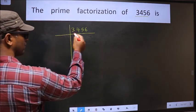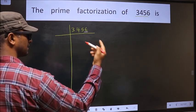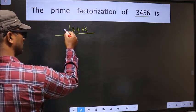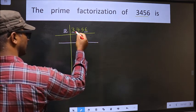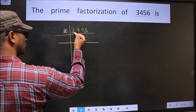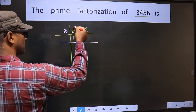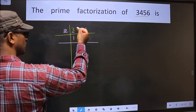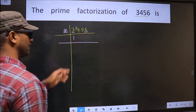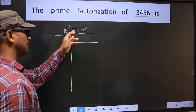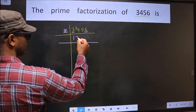For this number the last digit is 6, which is even, so we take 2 here. The first number is 3; a number close to 3 in the 2-table is 2 once 2. 3 minus 2 is 1, 1 carried forward making it 14. When do we get 14 in the 2-table? 2 sevens is 14.